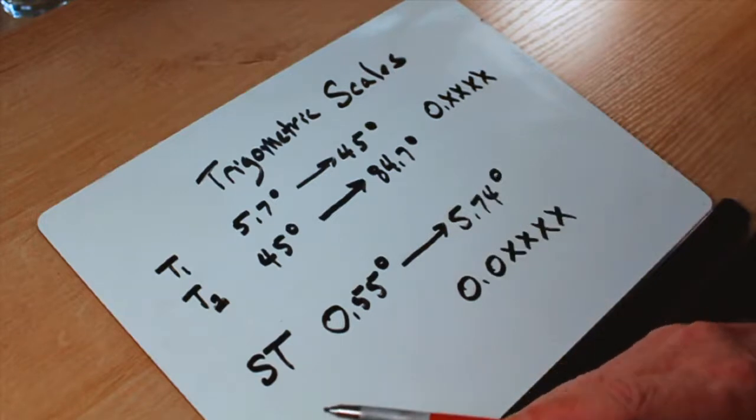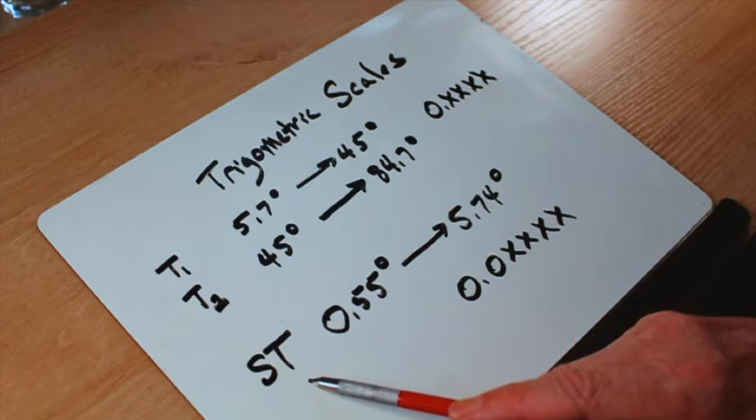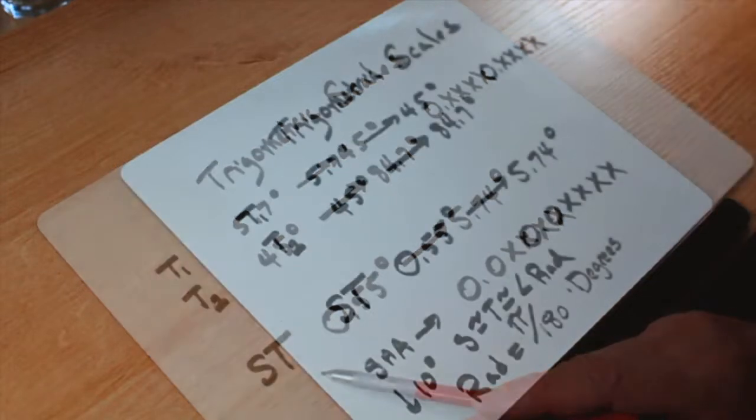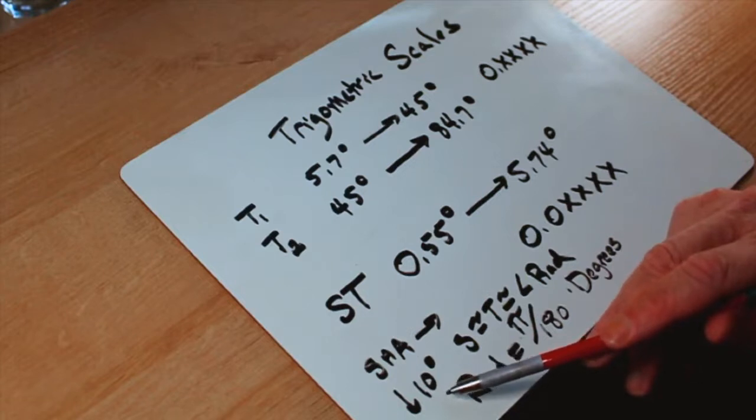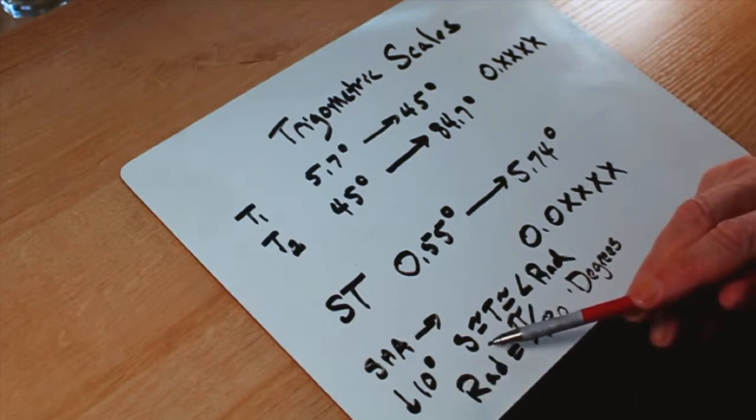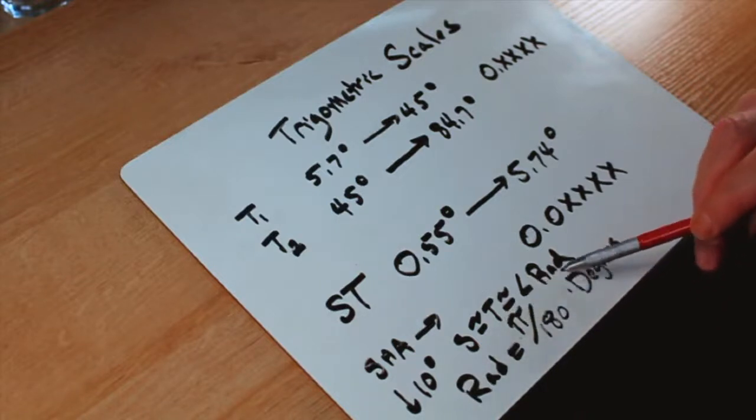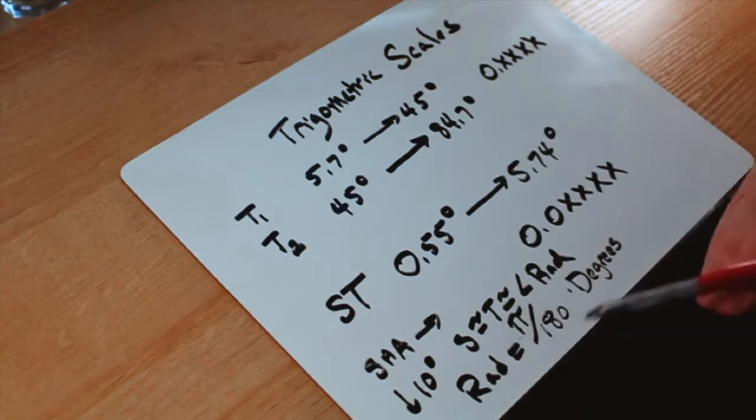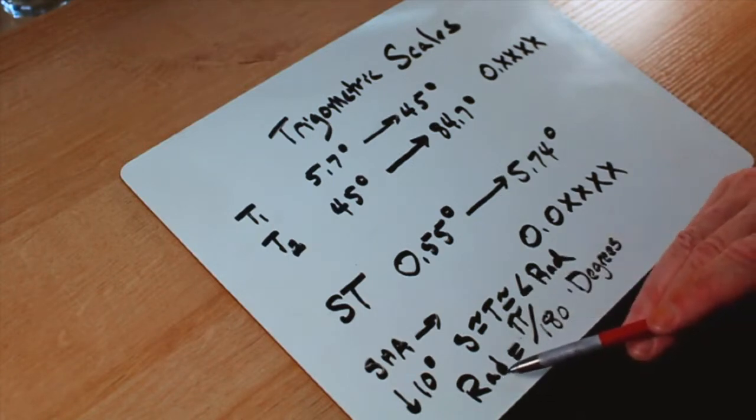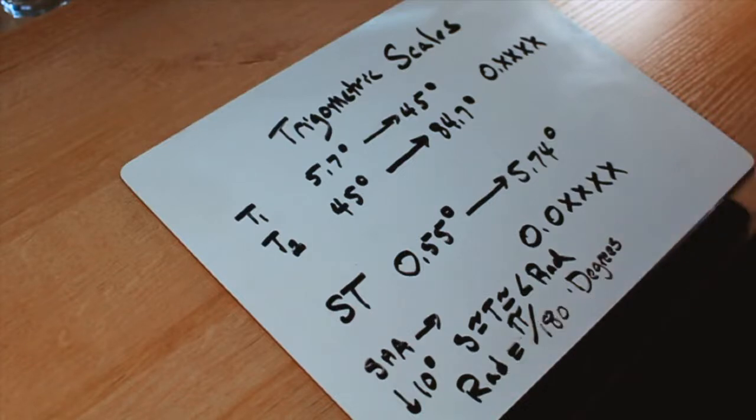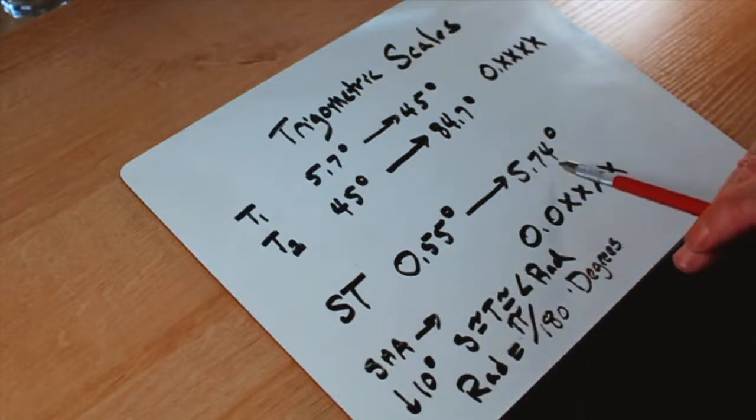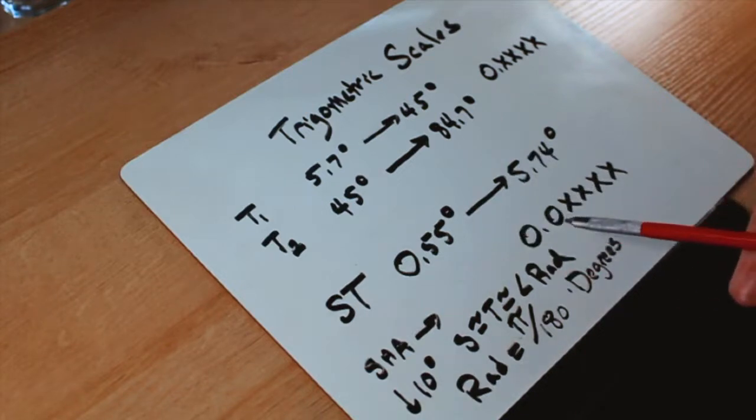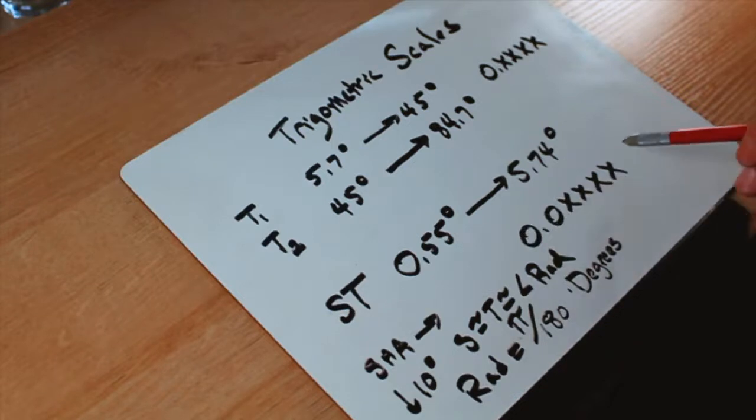Working together with both the s-scale and the t-scale is something called the s-t-scale. This is for something called the small angle approximation. The small angle approximation says that when angles get small, and we'll use below 10 degrees. Some people even take it a little higher than that. The sine approximates the tangent, which approximates the angle in radians. And an angle in radians, there are two pi radians in 360 degrees. So if you divide pi by 180 and multiply it by degrees, you'll get the number of radians. That's how the s-t scale works. And if you read an angle between 0.55 degrees and about 5.74 degrees, you're going to get a sine and a tangent in the form of 0.0 something something something something.